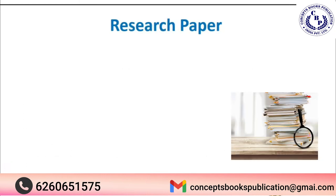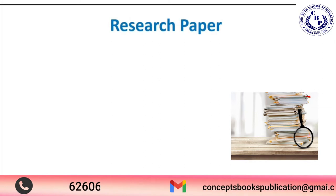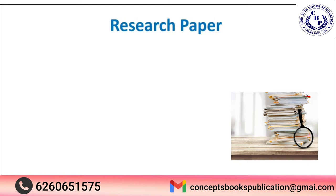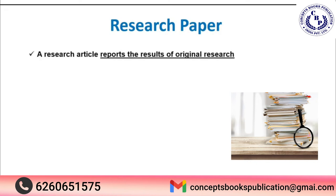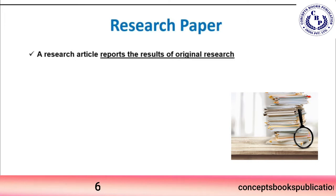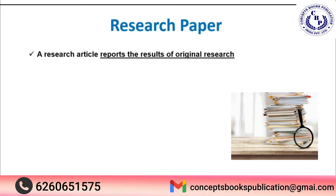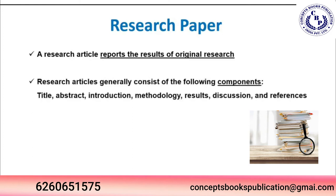Now let's talk about research papers. A research paper is the opposite of a review paper. While a review paper is a compilation of others' already-published work, a research paper always reports the results of original research. Whether you are a doctoral fellow, postdoctoral fellow, or doing a master's dissertation, whatever outcomes you obtain represent data not previously published by others — that is the original piece of work you can publish as a research paper.